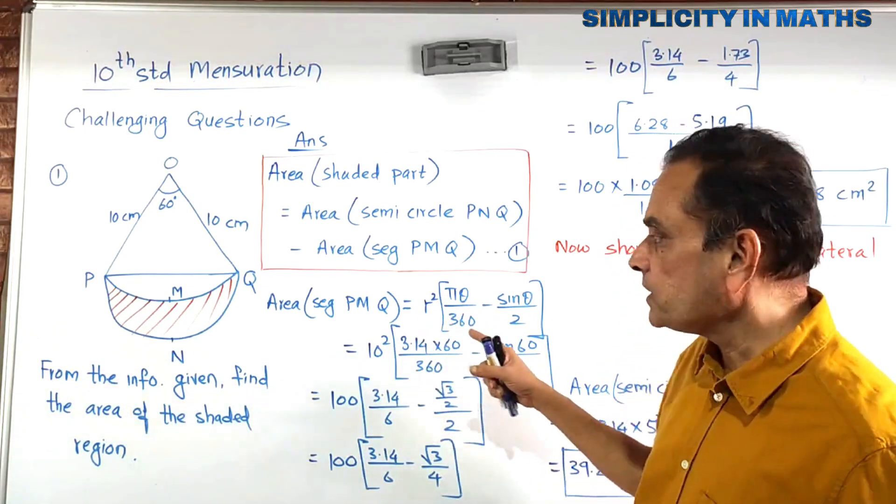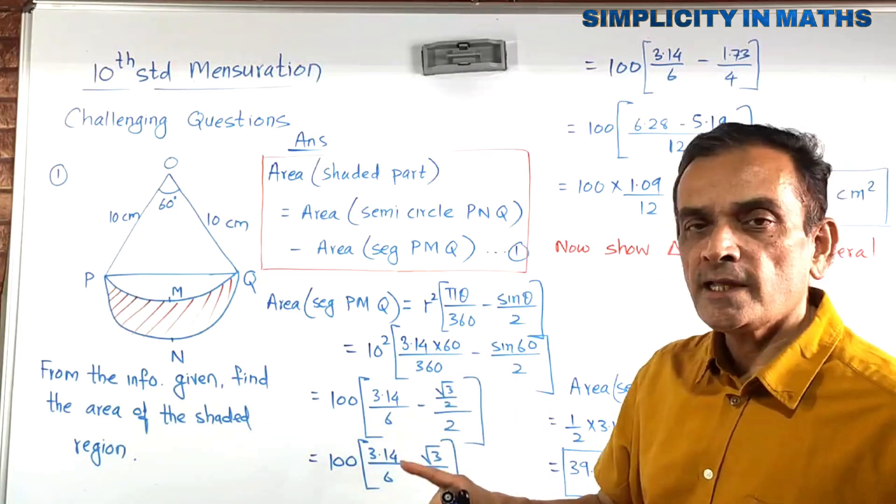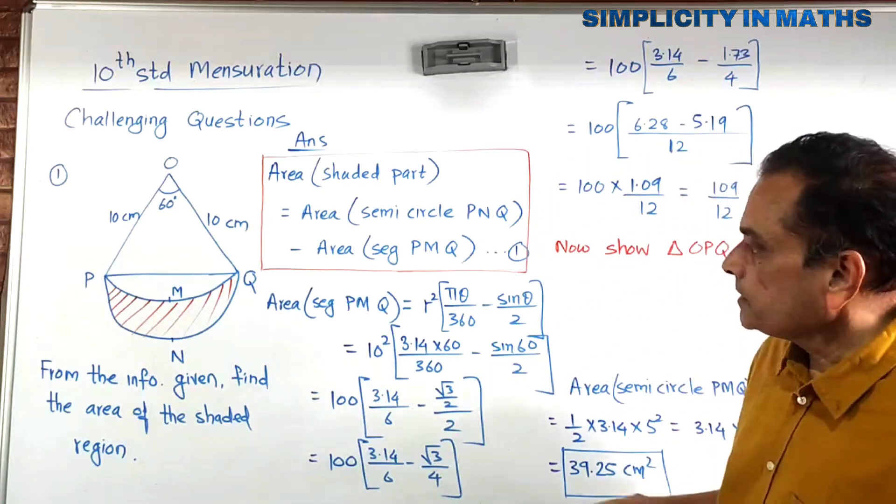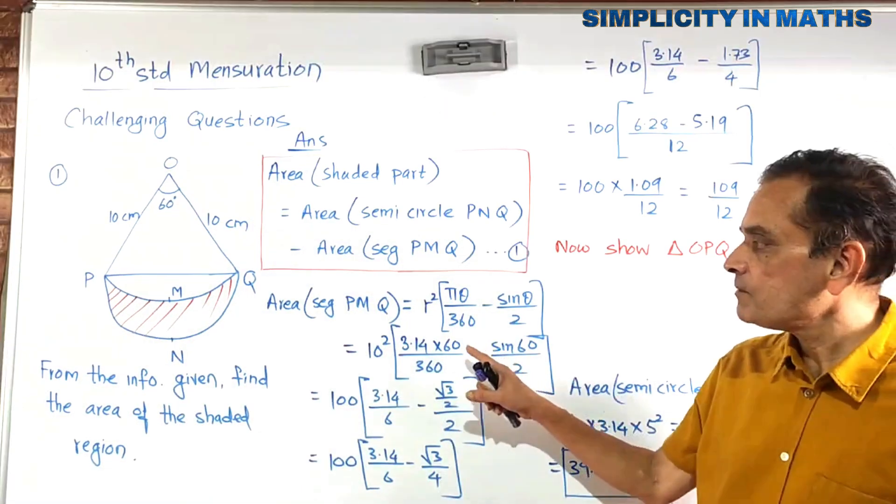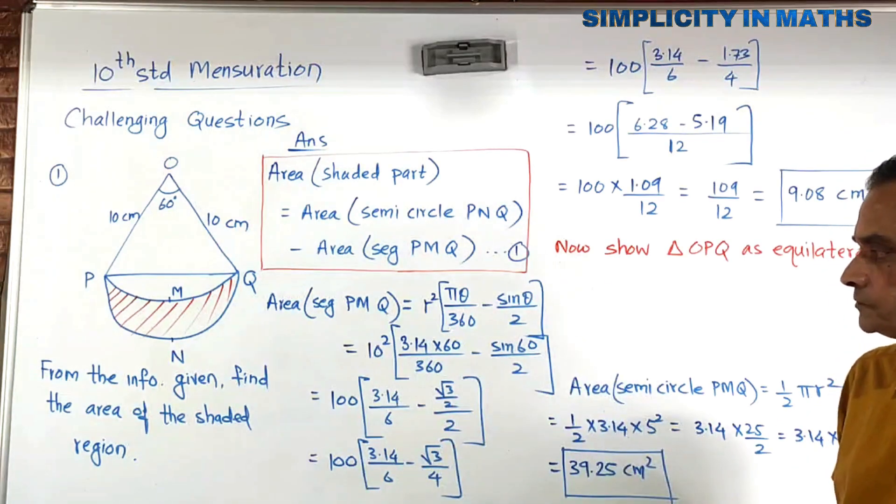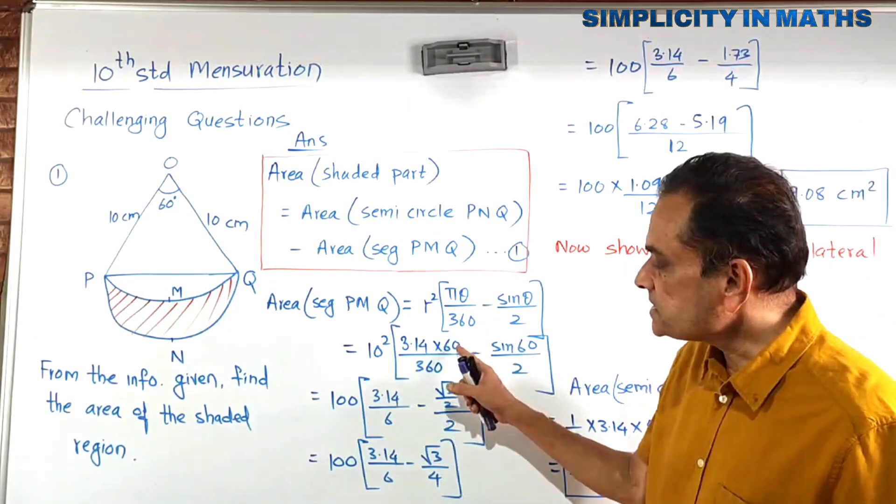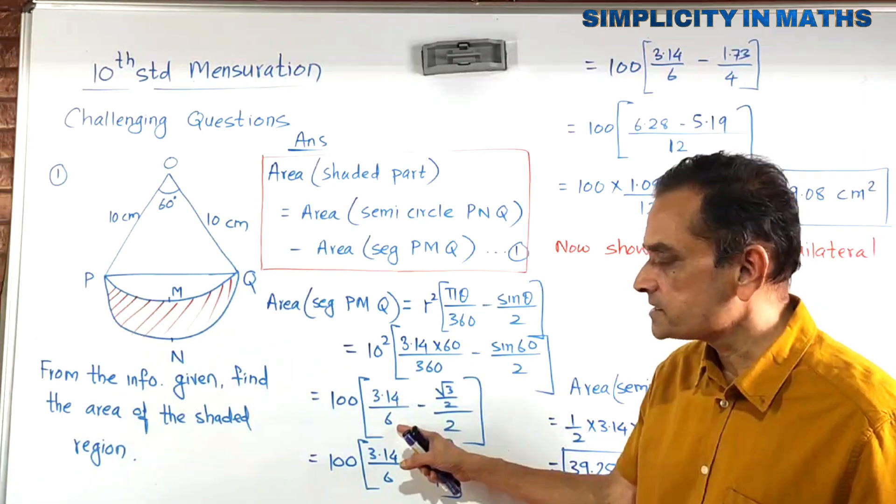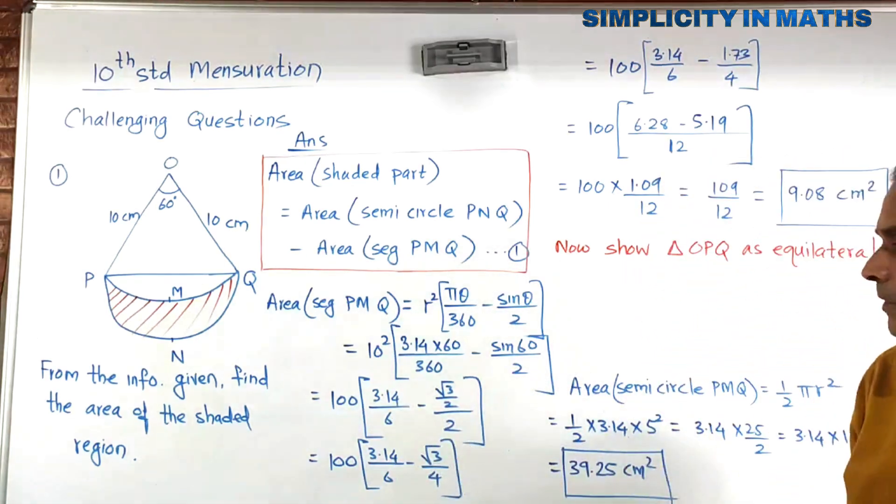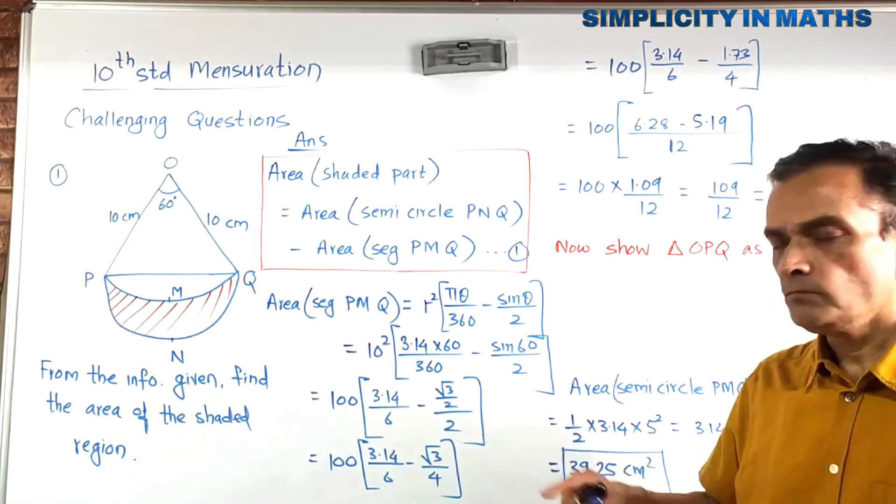And then, write the formula. Now, after writing this formula, just put the value of R and theta over here. They have mentioned that take the value of pi as 3.14. So, if I substitute over here, theta is 60, pi is 3.14, R is 10, what do I get? I get all this. So, now, 60 upon 360, 60 into 6 is 360, you get 3.14 upon 6, 10 squared is 100. So now, value of sine 60 root 3 by 2, and upon 2, right?